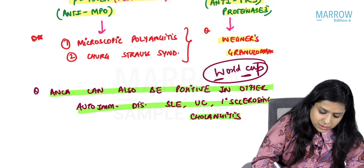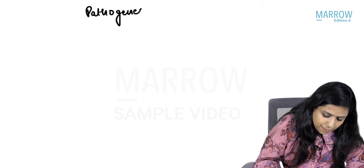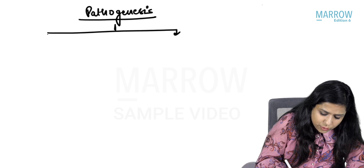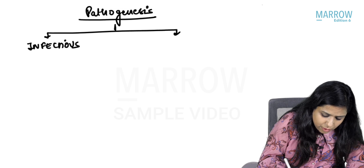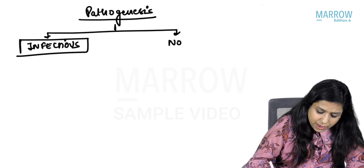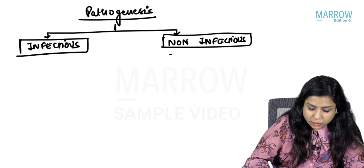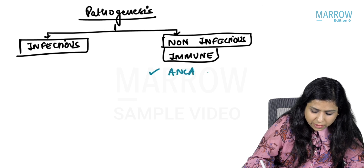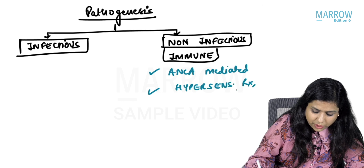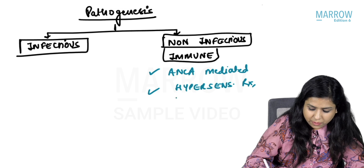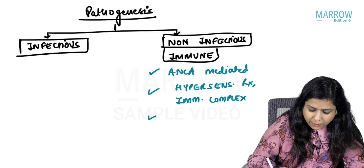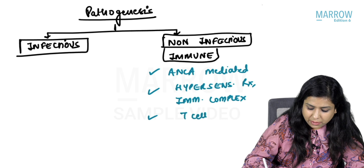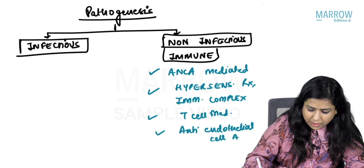Now let us understand the pathogenesis of vasculitis. It is of two types: infectious causes — such as viruses like rickettsia — or non-infectious causes, which are mostly immune causes. These include ANCA mediated, hypersensitivity reactions, immune complex mediated, T cell mediated, or anti-endothelial cell antibody mediated.